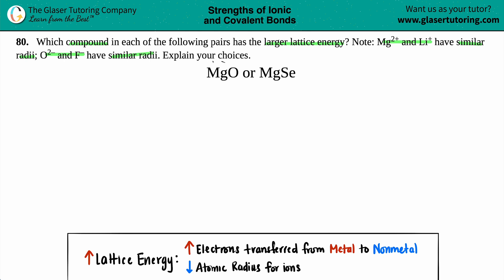So we have MgO and MgSe. We need to find out which one has the larger lattice energy. Lattice energy is the amount of energy needed to break down an ionic compound into its ions.